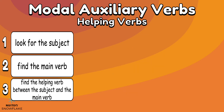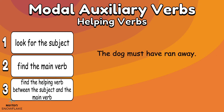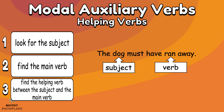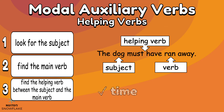Find the helping verb in this last sentence: The dog must have ran away. Dog is our subject. Ran is the main verb. Which word is the helping verb? Must have is our helping verb. It is telling us the time, that the event has already happened. It is also setting the tone by expressing possibility.